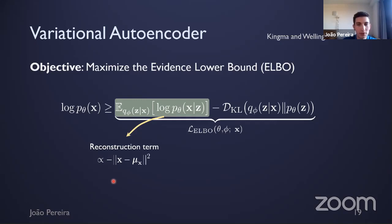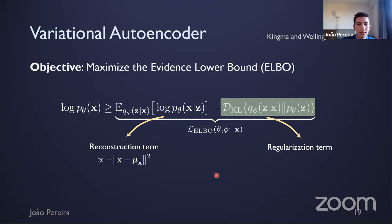Looking deeper into the ELBO: the first term is an expectation under the approximate posterior of log p(x|z). Using a Gaussian parameterization, this is proportional to minus the reconstruction error — so maximizing the ELBO minimizes reconstruction error, as in the deterministic autoencoder. The second term is a regularizer: it penalizes approximate posteriors that are far from the chosen prior. These two terms together form the VAE objective.